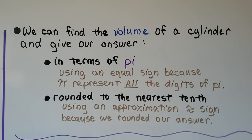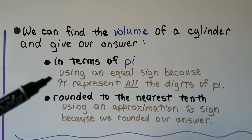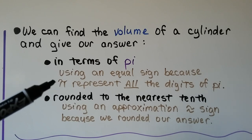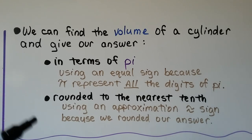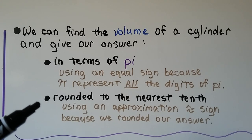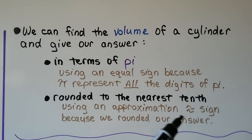We can find the volume of a cylinder and give our answer in terms of pi using an equal sign, because the symbol pi represents all the digits of pi. Or we could give our answer rounded to the nearest tenth using an approximation sign, because we've rounded our answer.